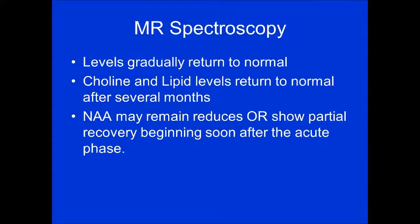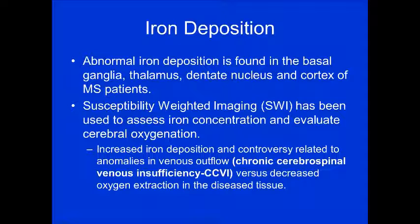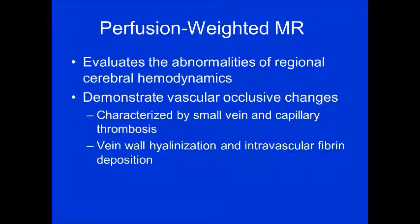Eventually, choline and lipid levels return to normal after several months; however, NAA levels may remain reduced or show only partial recovery beginning just after the acute phase. Iron deposition in MS patients is found in the basal ganglia, thalamus, dentate nucleus, and cortex. Susceptibility-weighted imaging, T2-star, or hemo-flash sequences are used to assess iron concentration and cerebral oxygenation. This iron deposition may be related to anomalies of venous outflow, possibly connected to CCSVI, though this is not yet confirmed.